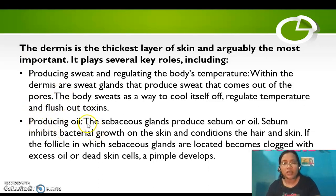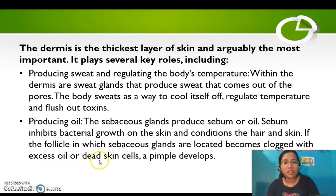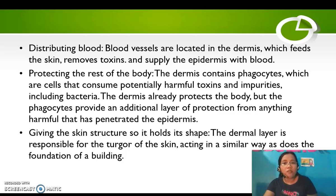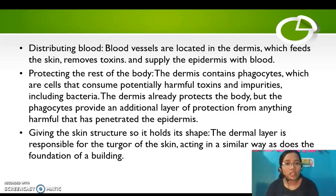The second role of the dermis is producing oil. The sebaceous glands produce sebum or oil, which inhibits bacterial growth on the skin and conditions the hair and skin. If the follicle becomes clogged with excess oil or dead skin cells, a pimple develops. Third, the dermis distributes blood — blood vessels located in the dermis feed the skin, remove toxins, and supply the epidermis with blood. Fourth, the dermis contains phagocytes, which are cells that consume potentially harmful toxins and impurities, including bacteria.